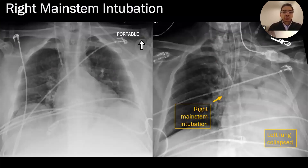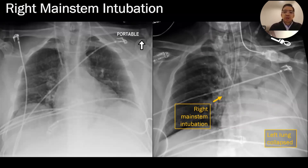One natural clinical consequence of that is if you have a patient you're intubating and you accidentally put the ET tube in too far, nine times out of ten it's going to go into the right main stem bronchus. Notice this is pre-intubation and this is post-intubation on the right. In this patient, the ET tube went too far and as a result the left lung collapsed.